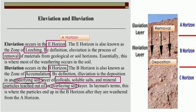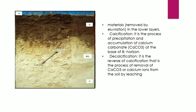As seen in this picture, eluviation involves removal from the A horizon and deposition into the B horizon. The underlying soil is the B horizon, where deposition occurs, and the A horizon is the overlying soil from which removal takes place.